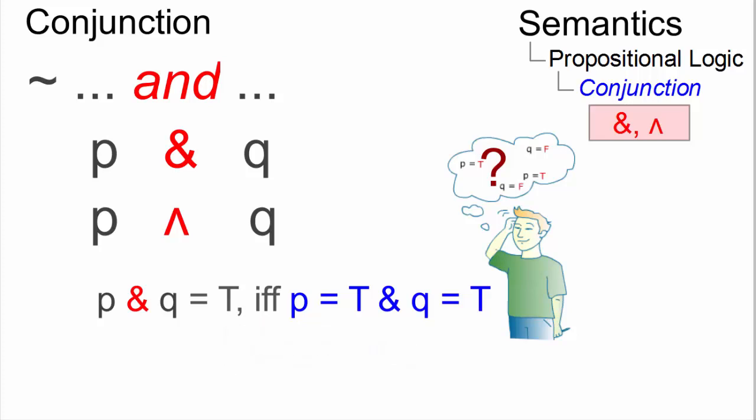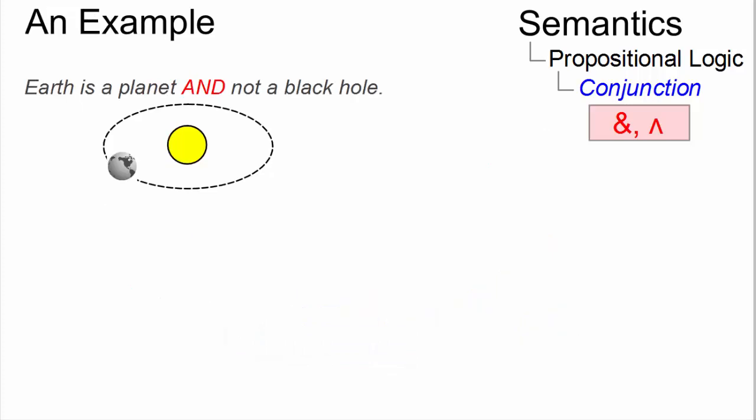Here is an example. Earth is a planet and not a black hole. Assuming that both propositions are true, that is, the Earth is a planet and it is not a black hole, we can thus assume that P and Q is true too.